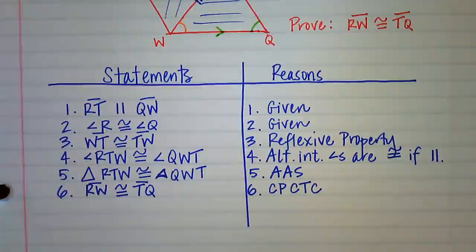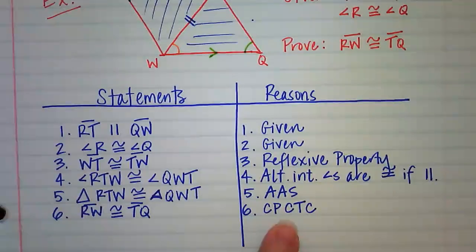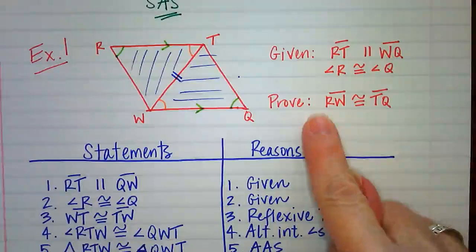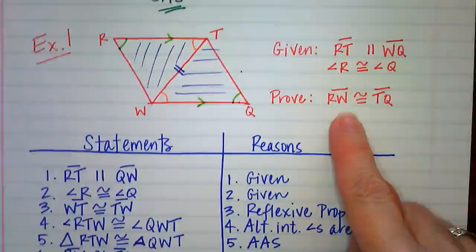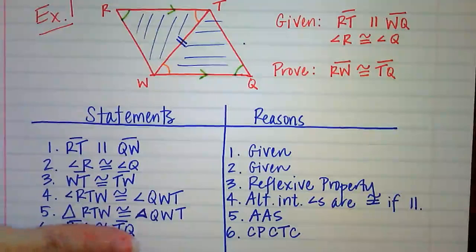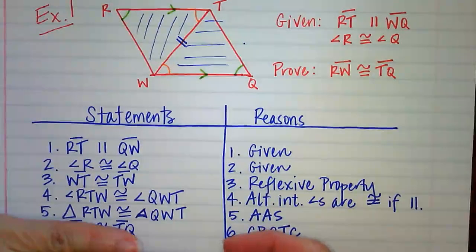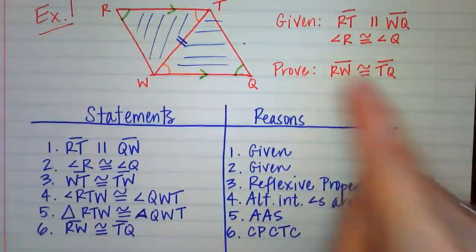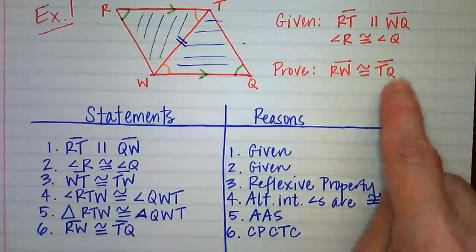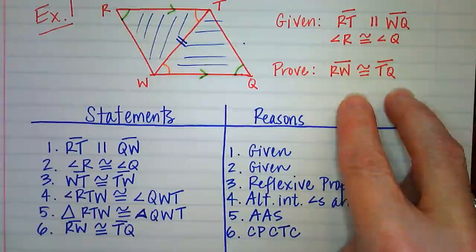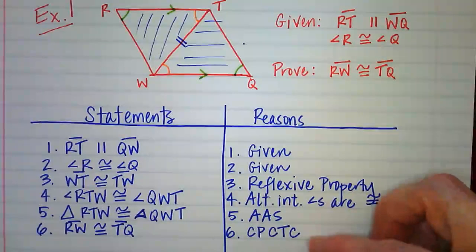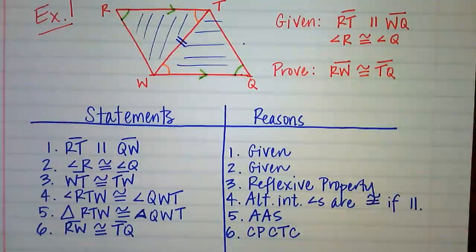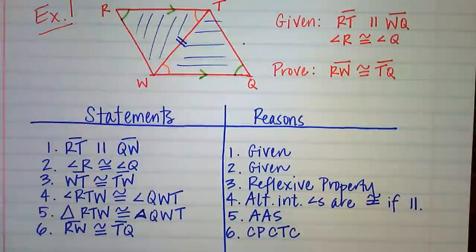You'll know you need CPCTC when your proof goal isn't just to prove two triangles are congruent. If you only needed to prove the triangles congruent, you would stop at line five. But when you need to prove two sides or angles are congruent, you first prove the triangles congruent, then use CPCTC — corresponding parts of congruent triangles are congruent — to reach your conclusion.